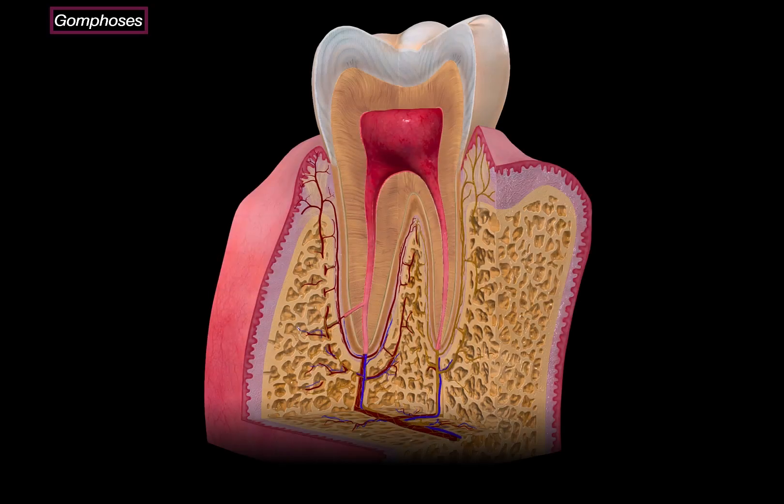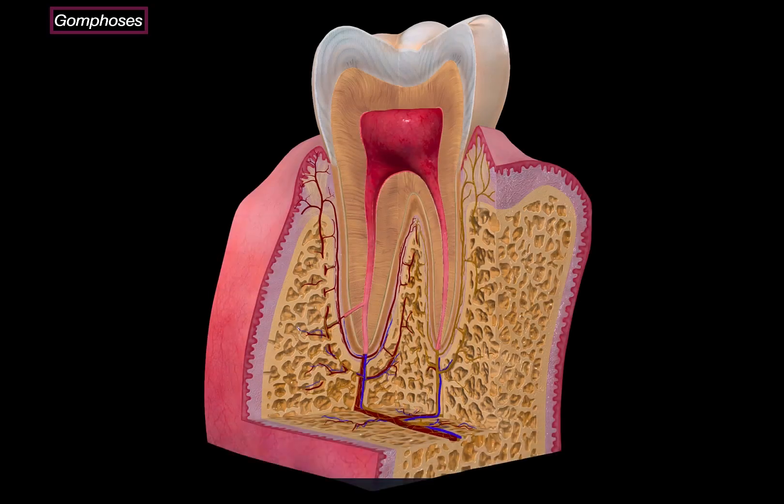Gomphosis is a pretty unique joint, because it's only found in one place: the connections between your teeth and your jaw bones. The tooth inserted into the socket of the alveolar process — that is a gomphosis joint.